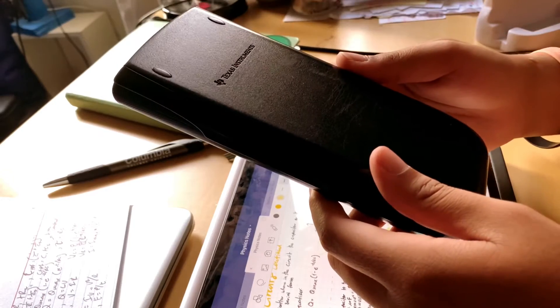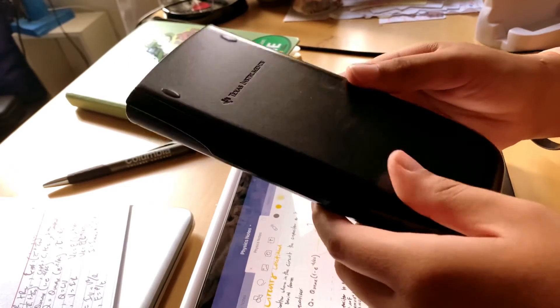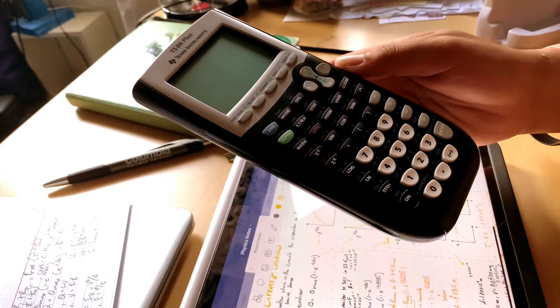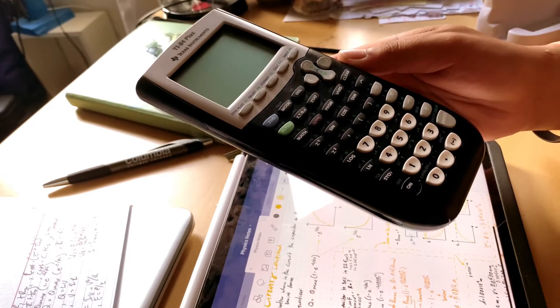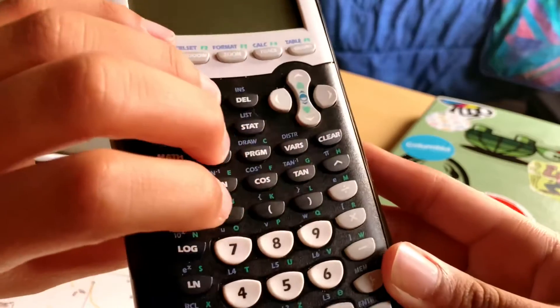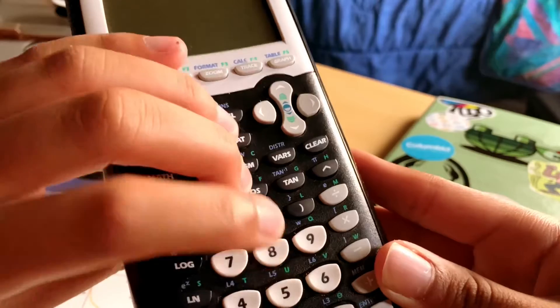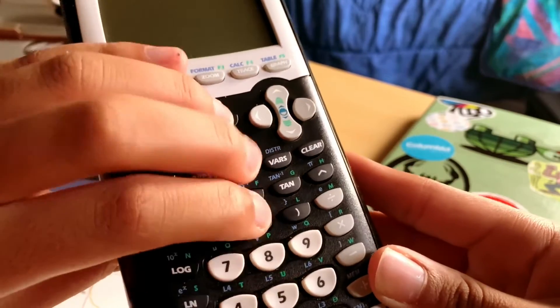The calculator I've been using for the past three years is the old model of TI-84. It was cheaper than the CE model and has pretty much all the same basic functions, even if without the fancy digital stuff. Personally, I think the buttons on this older model are more tactile and therefore more satisfying to use.